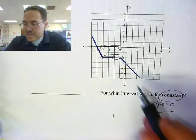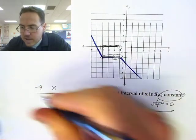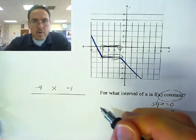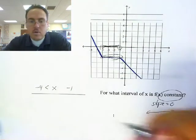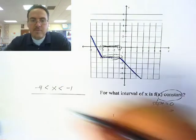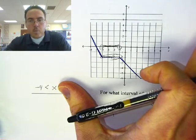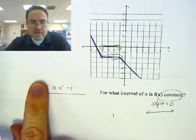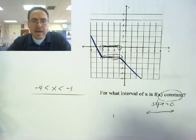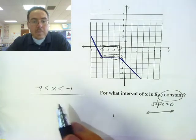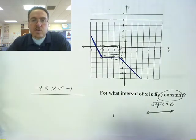So how do we communicate that? If all the x values are in between negative one and negative four, here's what you do: you put x in the middle, you put negative four on this side, you put negative one on this side. Now you need to make sure your inequality symbols are pointing the right way. We want to make sure that x is bigger than negative four and less than negative one. So this is the part of the x-axis I'd want to look at — as long as x is in between negative four and negative one, that's the section of our function where the slope is constant.